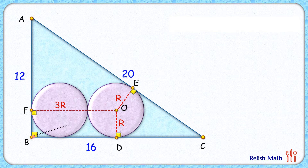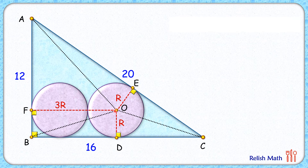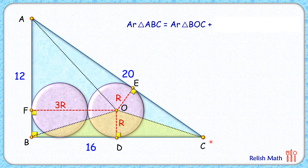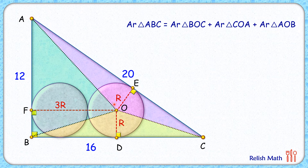Now let's join BO, OC, and AO. We will find the radius of the circle by comparing the area of the full triangle ABC. The area of triangle ABC is equal to the area of triangle BOC plus the area of triangle AOC plus the area of triangle AOB.